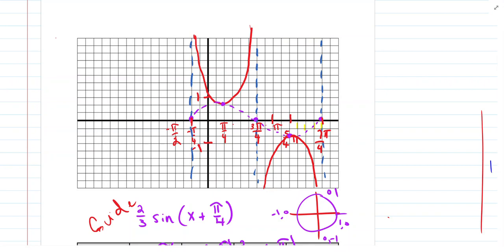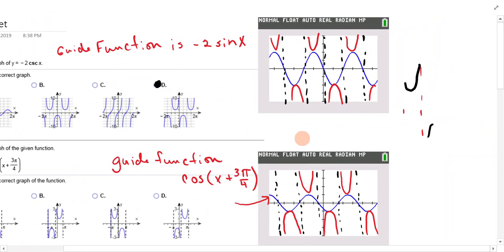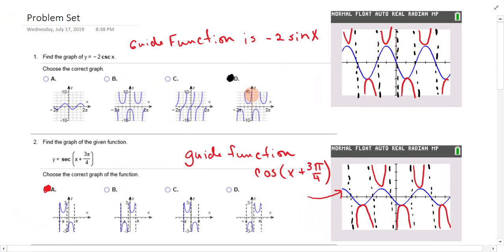So let's go look at our problem set. All right, so number one says graph negative 2 cosecant x. So the guide function is negative 2 sine x. So I went to my calculator, and I graphed negative 2 sine x. And I got this blue graph. So I sketched it. But remember, your asymptotes go where these x-intercepts are. And then your actual cosecants are touching up there. And so you want to look and see which one does that match. This one has an upper thing really close to here, and one down here like this. So this is the correct one. So graph it in your calculator and try to match.